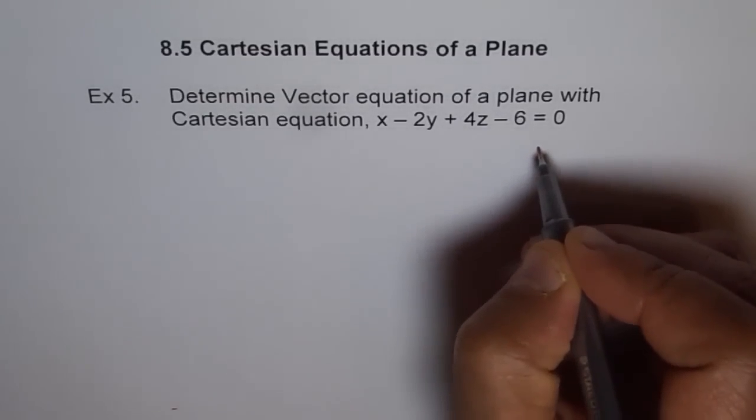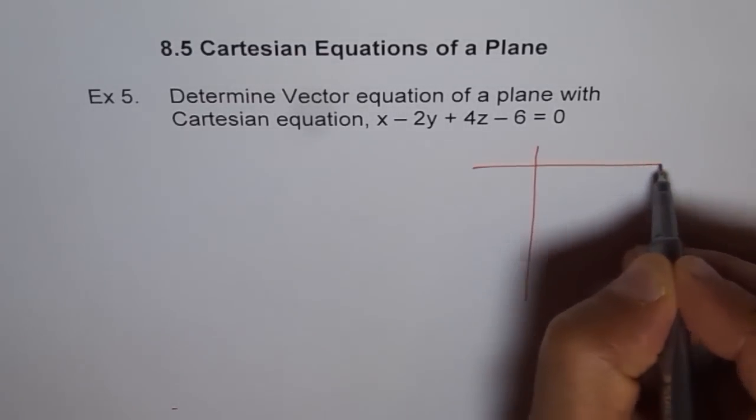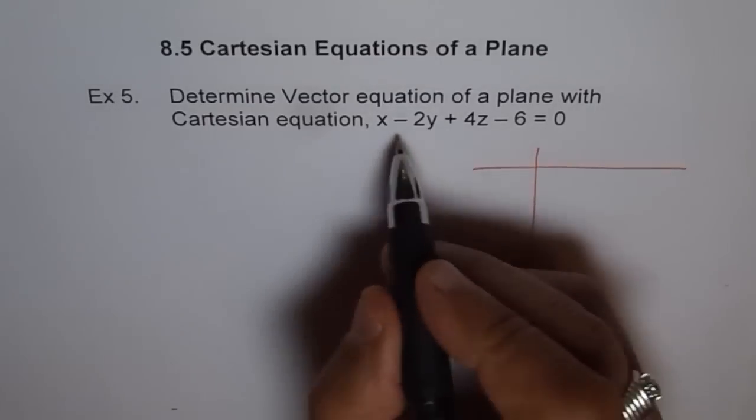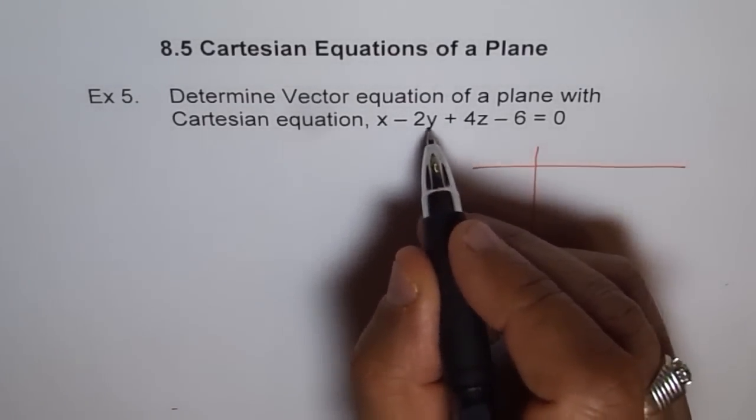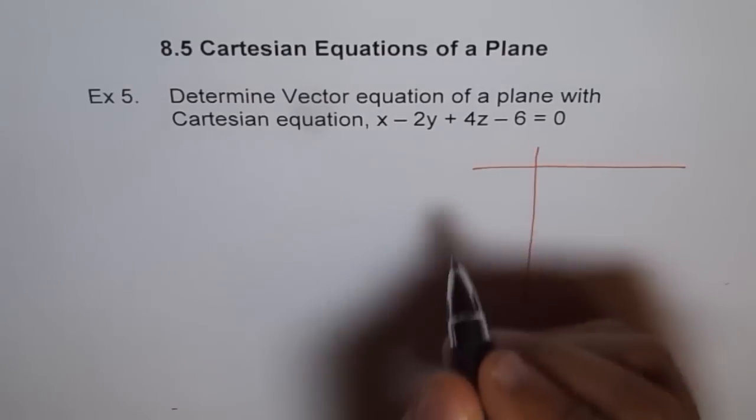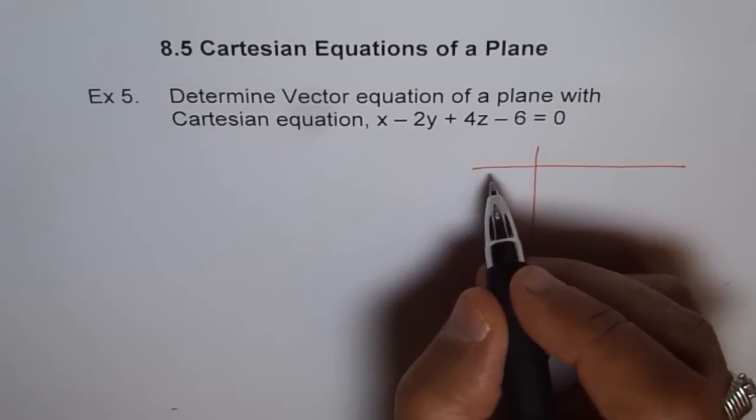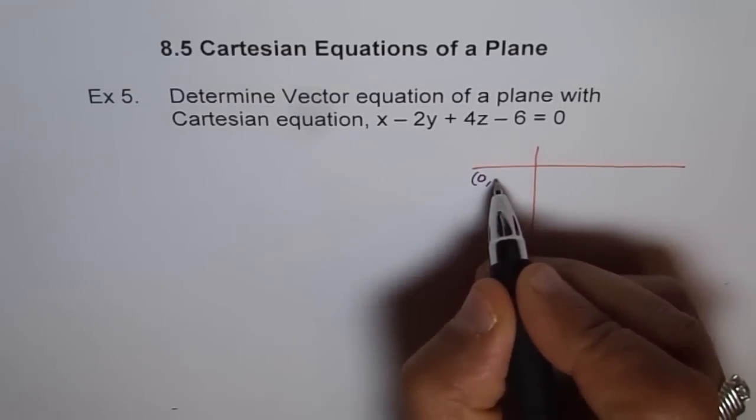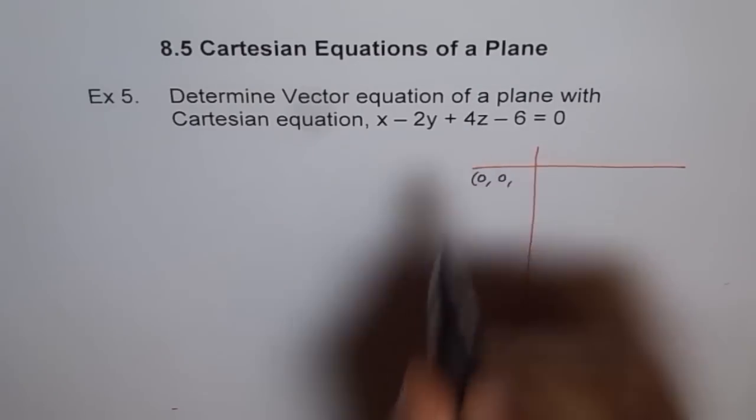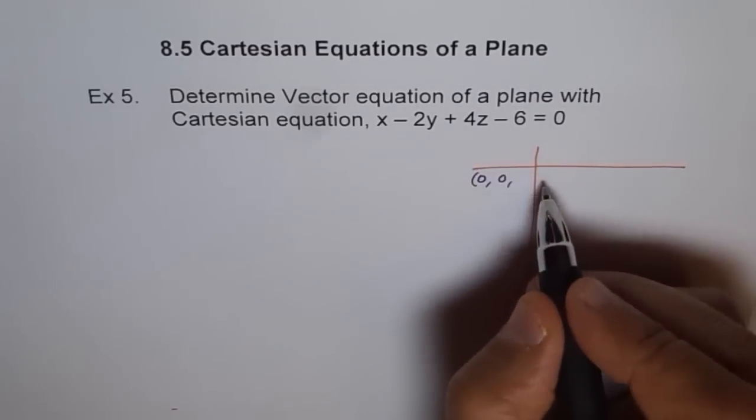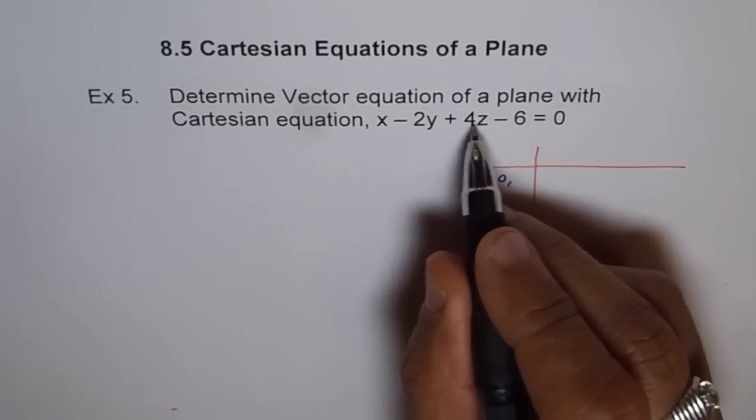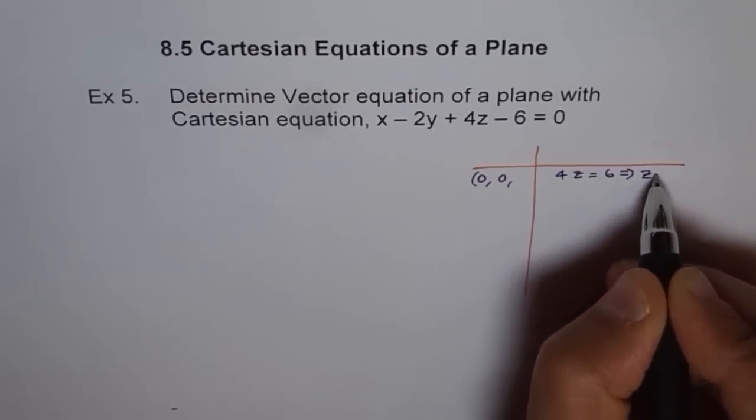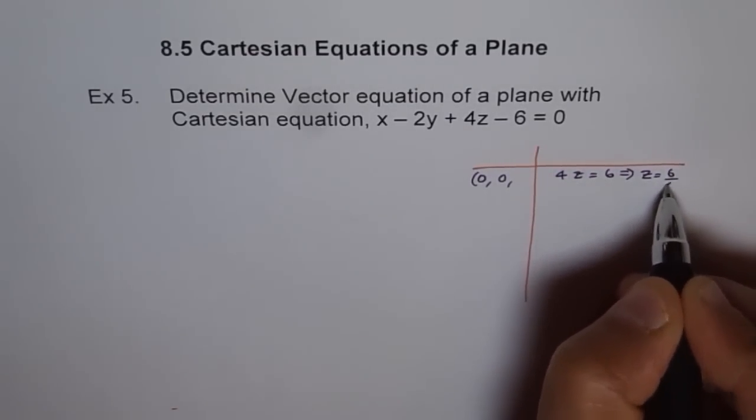So, what we have here is, let me just make a table for you to find three points. That is the equation. Let us say x is 0 and y is 0. In that case, what is z? If I write x as 0 and y as 0, then let us find what z is. To find z, we will put here 0, 0 and we get 4z equals 6, which implies z equals 6 over 4.